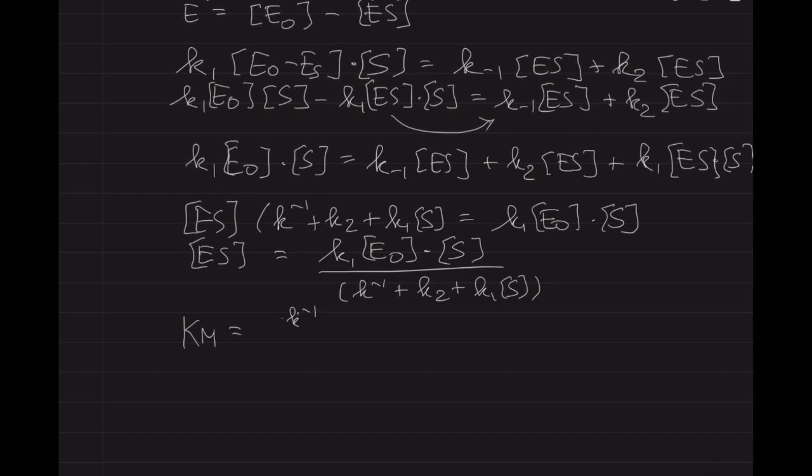And here we actually have the bit where we're going to substitute in this Km. So Km is the Michaelis-Menten constant that you will have seen in the graph. And you need to know that this is K-1 plus K2 divided over K1.